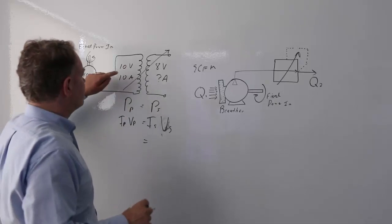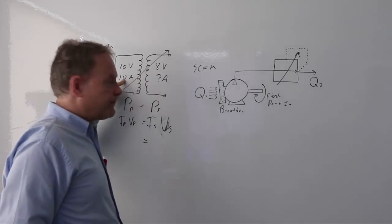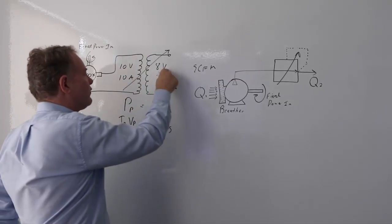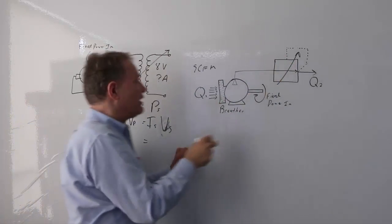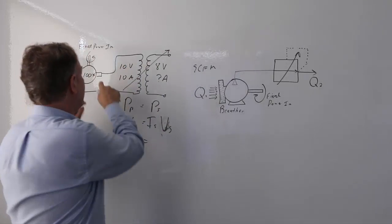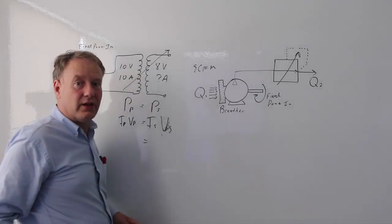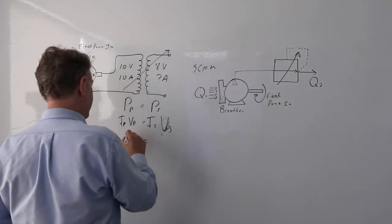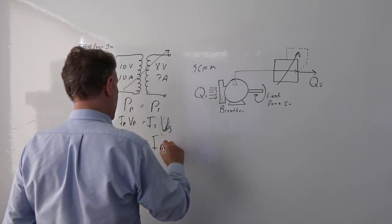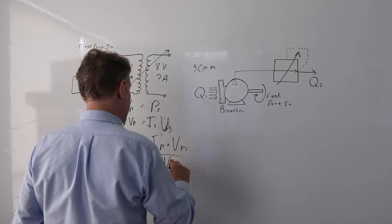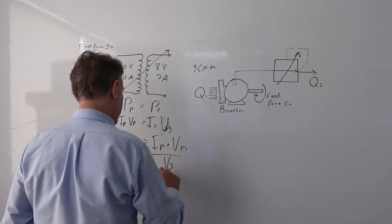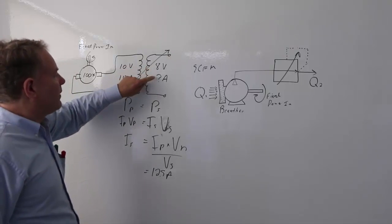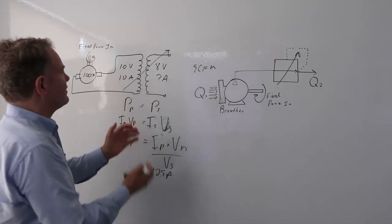I secondary = I primary × V primary ÷ V secondary, which gives 12.5 amps. I've lowered my voltage, so my current has gone up, but the two sides are balanced. That's the same concept for compressors: if I lower the pressure, my flow rate goes up. These quantities are linked — just like voltage and current in a transformer.